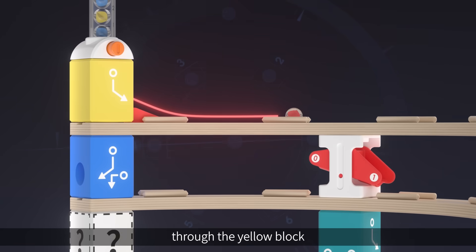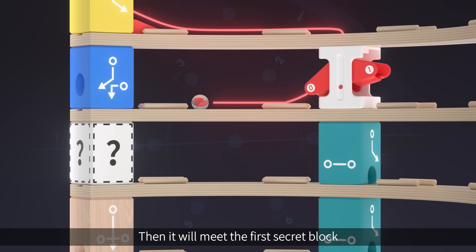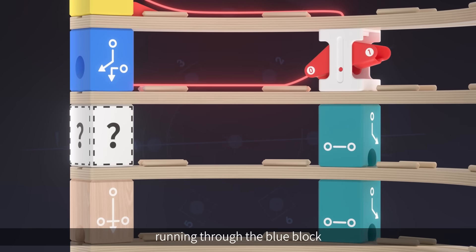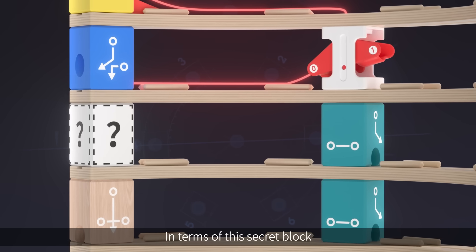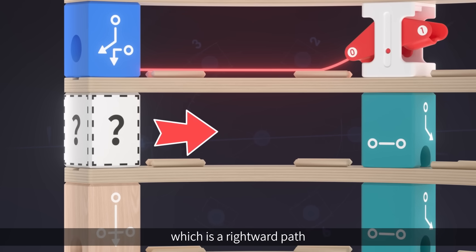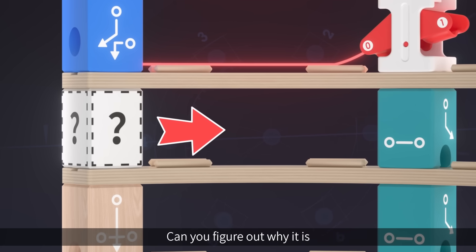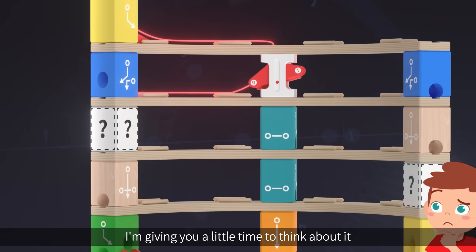Let's assume that the red marble will roll into the red seesaw through the yellow block and out of the number zero. Then it will meet the first secret block, running through the blue block. In terms of this secret block, we can see that there must be only one path, which is a rightward path. Can you figure out why it is? I'm giving you a little time to think about it.